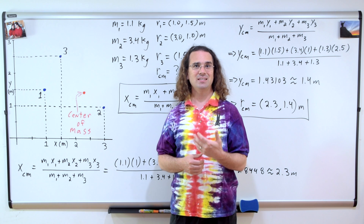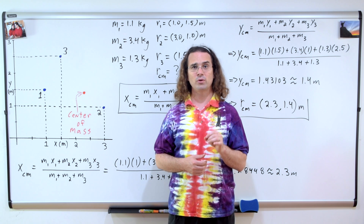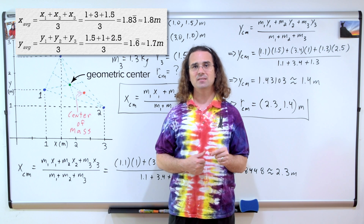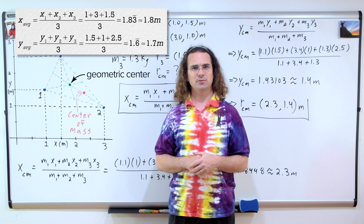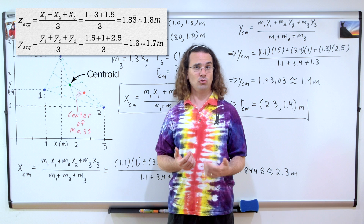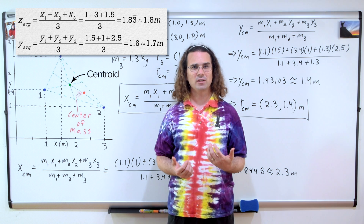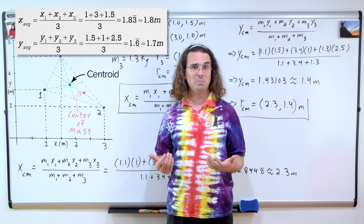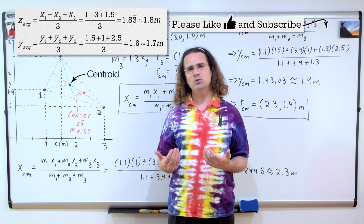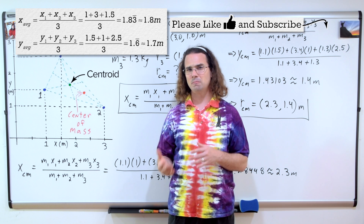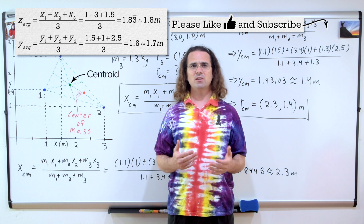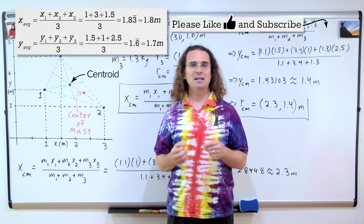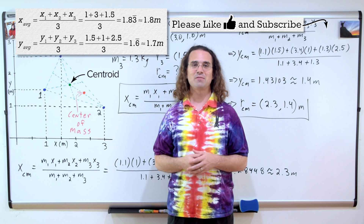Notice how the center of mass is different than the geometric center of the three-particle system, which would be located at an x-position of 1.8 and a y-position of 1.7 meters. This geometric center is called the centroid. The centroid does not account for the different masses of the particles and is where the center of mass would be if they all had the same mass. Because our three objects have different masses, the center of mass and the centroid are not in the same location. Thank you very much for learning with me today.